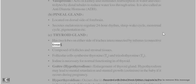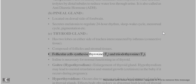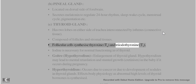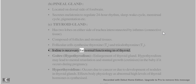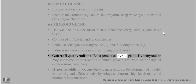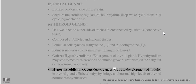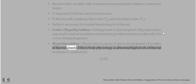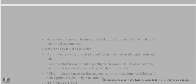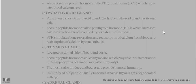The thyroid gland is composed of follicles and stromal tissues. Follicular cells synthesise thyroxine (T4) and triiodothyronine (T3). Iodine is necessary for normal functioning. Goitre – hypothyroidism causes enlargement of thyroid gland and may lead to mental retardation and stunted growth (cretinism) in babies if it occurs during pregnancy. Hyperthyroidism occurs due to cancer or development of nodules in the thyroid gland, causing abnormally high levels of thyroid hormones.